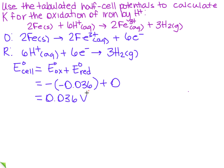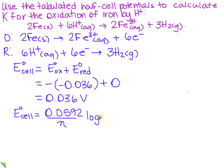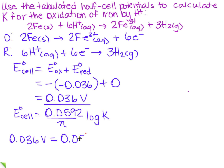Now we need to make sure that we remember the formula so that we can find K. If you recall, it is E of the cell equals 0.0592 over N log of K. I know the left-hand side — I just found it right here. So I have 0.036 volts equals 0.0592 divided by N. That's how many electrons we have on each side, so that's going to be 6. And then that's going to be log of K.